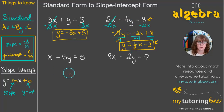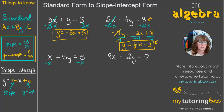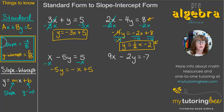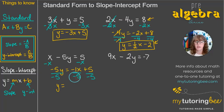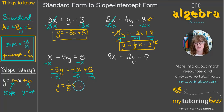Let's try one more: X minus 5Y equals 5. We don't have a coefficient with X, but we still get rid of the X term first, leaving us with negative 5Y equals negative X plus 5. Then we divide all terms by negative 5. Remember, X without a written coefficient has an understood coefficient of 1, so negative over negative cancels, giving us one-fifth X. Positive 5 over negative 5 gives us negative 1. So Y equals one-fifth X minus 1.